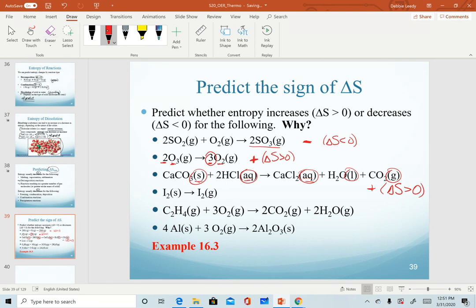In our fourth example, we just have a physical change. We have the sublimation of iodine going from solid to gas. So again, predicting a positive change here because we're increasing the amount of disorder as this process happens.